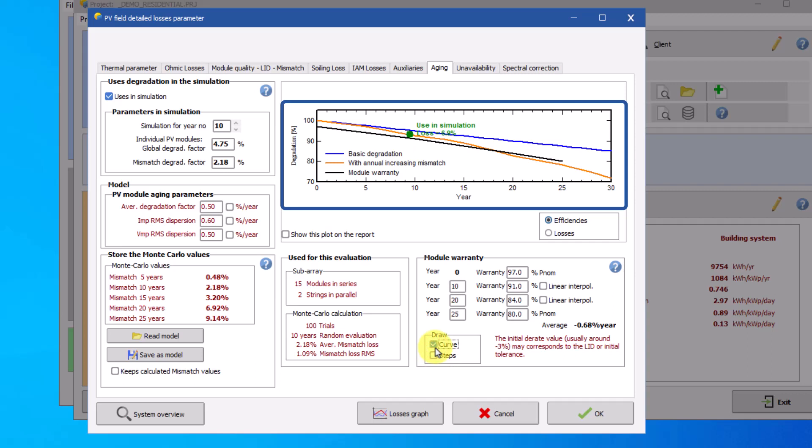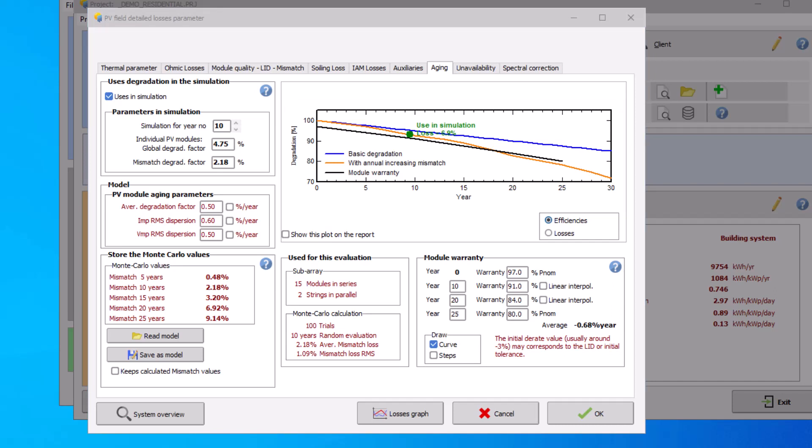The graph also illustrates a relative degradation with respect to a new PV module over a number of years. The blue line represents the global degradation of the PV module. This should translate to the decrease of power output of a PV module over time. The orange line is the degradation taken into account the distribution of IMP and VMP. This distribution increases with time and causes an increase in mismatch within strings. The green circle on the curve represents the total aging loss for the year of simulation.